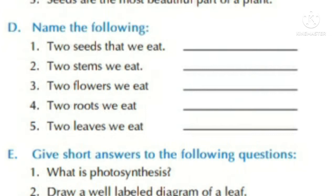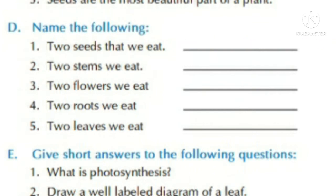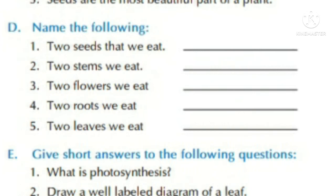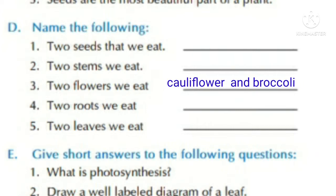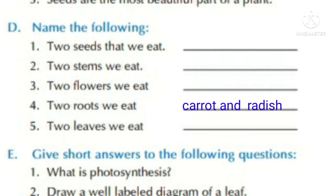Section D — Name the following. Number one: two seeds that we eat — mustard seed and wheat seed. Number two: two stems we eat — potato and onion. Number three: two flowers we eat — cauliflower and broccoli.